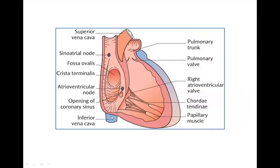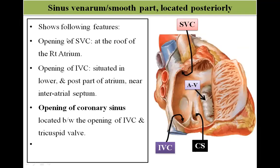Here you can see the opening of the superior vena cava and the opening of the inferior vena cava. The sinus venarum is the smooth part of the right atrium located posteriorly. It shows the opening of the superior vena cava at the roof of the right atrium. The opening of the inferior vena cava is situated in the lower and posterior part of the atrium, near the inter-atrial septum.